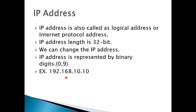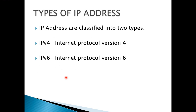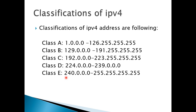IP address is also classified into two types: one is IPv4, which is version 4, and another one is IPv6, which is version 6. We move from version 4 to version 6 because IPv4 addresses are not enough for us. That is why we move to IPv6.